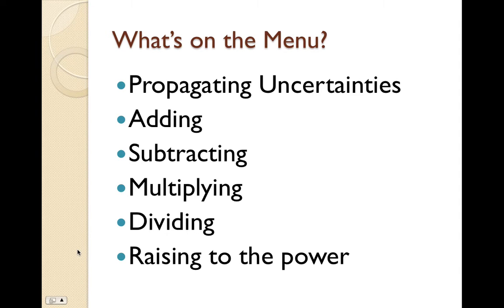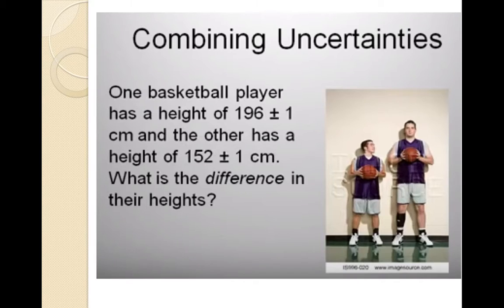We're going to be talking about propagating uncertainties, which is pretty much just combining measurements by adding, subtracting, multiplying, dividing, or raising that measurement to a certain power. Let's go ahead and begin with this example.